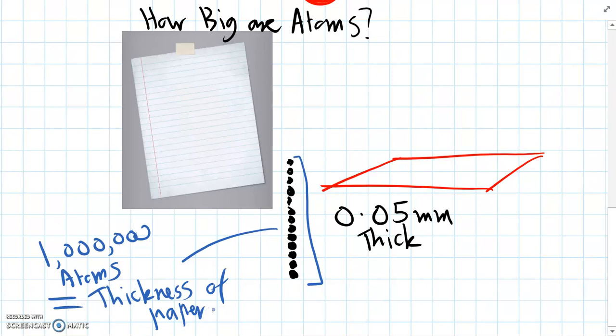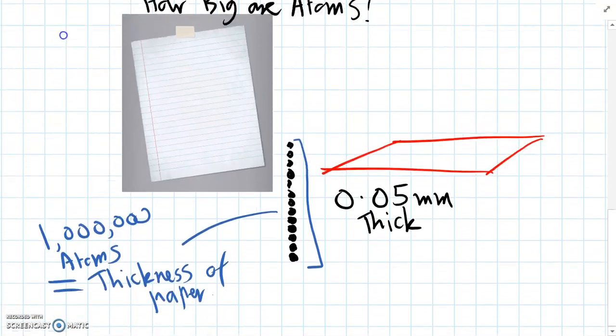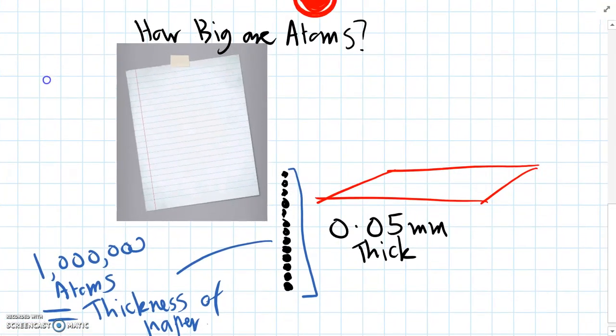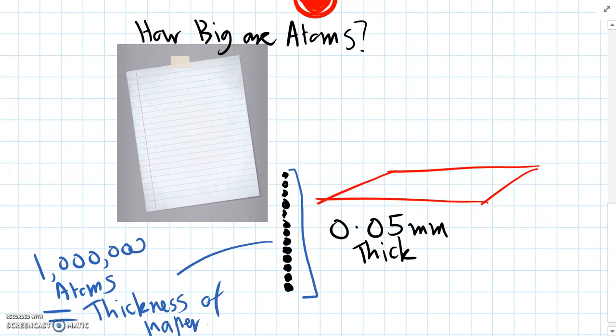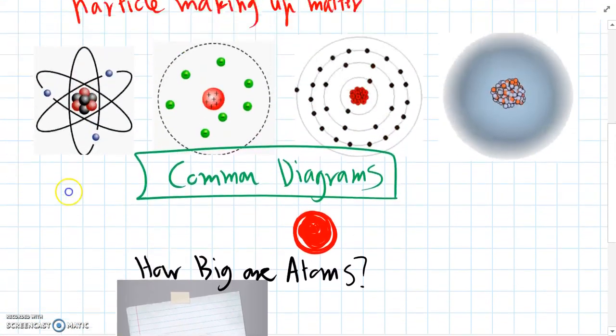So atoms are tiny. And this means that scientists who've been studying atoms, which are chemists and physicists, they need to do experiments on things they can't see, which makes it really difficult. But through the last few hundred years, we've been able to figure out a lot about atoms, even though we can't actually see them. And that's what we'll be learning about in the rest of this topic.